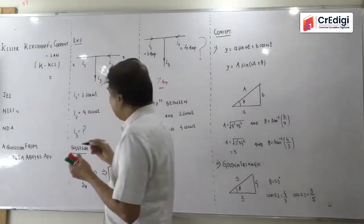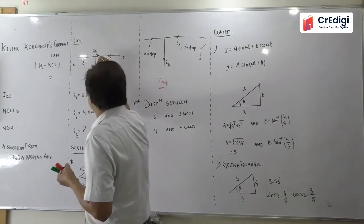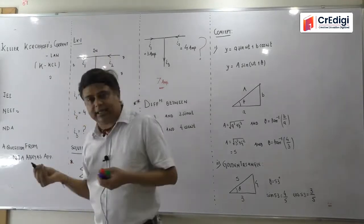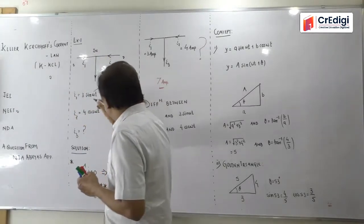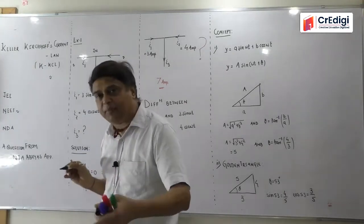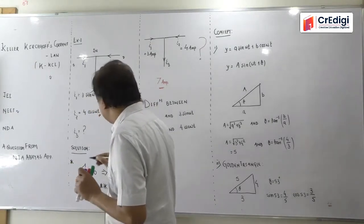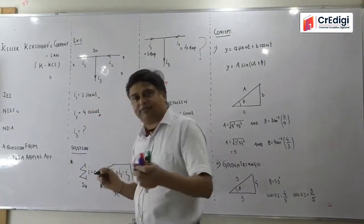You know that it is nothing but it will be the electrical junction. I1 is given to you as 3 sin omega t. The value of omega is not given. I2 is given to you 4 cos omega t and I3 is required to be calculated.